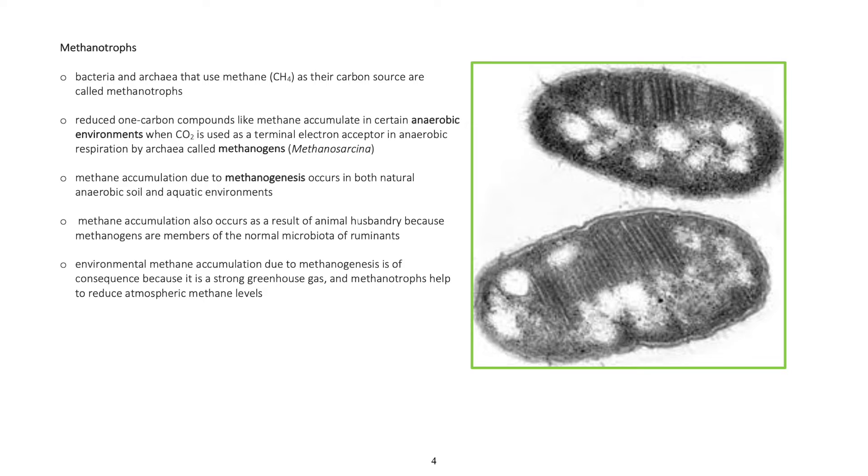Methane accumulation due to methanogenesis occurs in both natural anaerobic soil and aquatic environments. Methane accumulation also occurs as a result of animal husbandry because methanogens are members of the normal microbiota of ruminants.